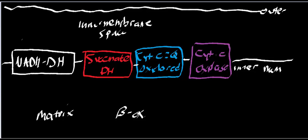Ultimately, we're going to have these enzymes — with the exception of one — pump protons into the inner membrane space. NADH dehydrogenase, which we could also call NADH ubiquinone oxidoreductase, is going to pump four protons. So for every dehydrogenation of NADH, complex one is going to pump four protons from the matrix into the inner membrane space.